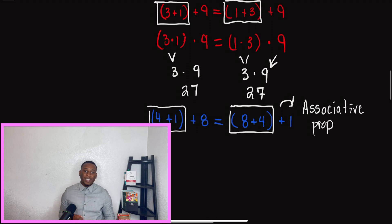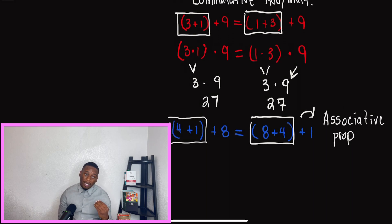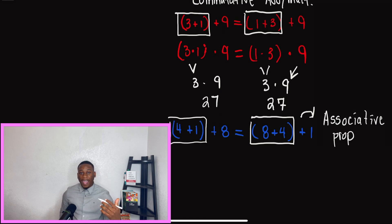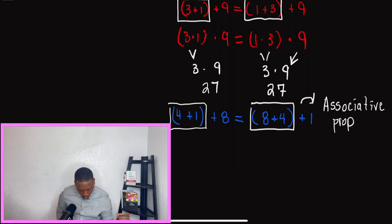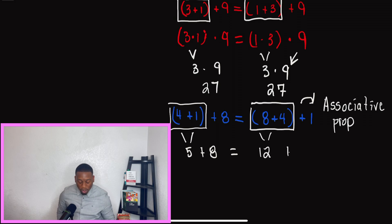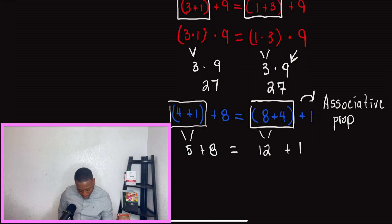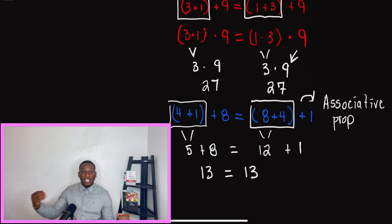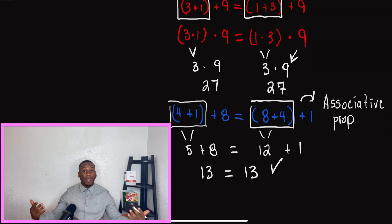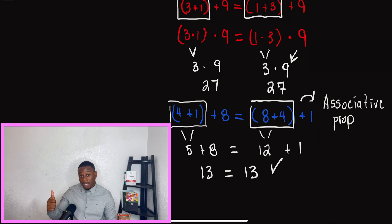With the associative property, what it's saying is that what is inside the parentheses can and will change, and even if it does, our answer will stay the same. So let's add through: five plus eight equals 12 plus one, and once we add both of these up, we get 13 equals 13. So the way we grouped the numbers did not change our answer — that's what you need to know about the associative property of addition and multiplication.